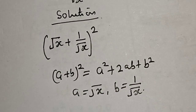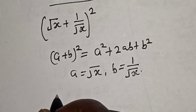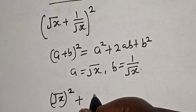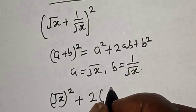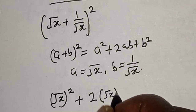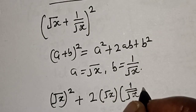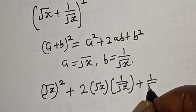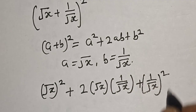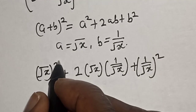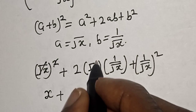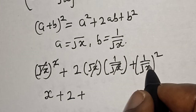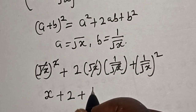Expanding, we get: (√s)² plus 2 times √s times 1 divided by √s, plus (1 divided by √s)². The √s terms cancel in the middle term, leaving 2 times 1, which equals 2. And (1/√s)² equals 1/s. So we have s plus 2 plus 1 over s.